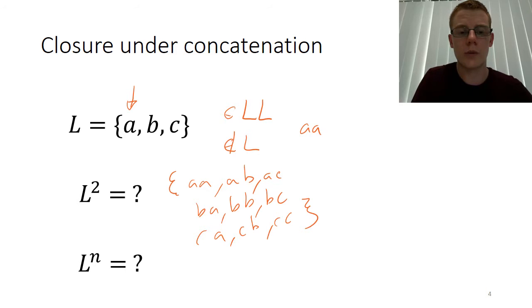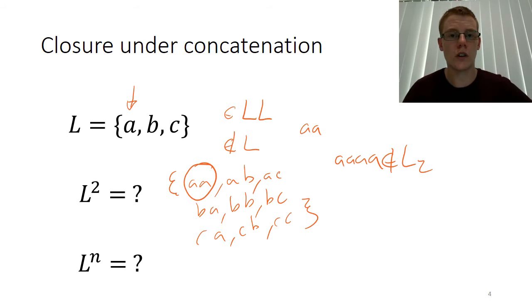Now obviously we can straight away grab AA, just like we did before, concatenate it to itself and get the string of four As, which is not in L². So L² is not closed.